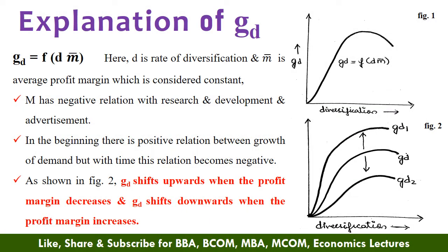Now, let us also discuss this model with the help of diagrams. GD is a function of D and M-bar. Here, D is the rate of diversification. Diversification means when a company changes its product line. Suppose an automobile company changes its product line to the telecommunications sector or retail business — we call that the company has diversified its business. And M is the average profit margin. M-bar is used as M is considered constant. This profit margin M has a negative relationship with advertisement and research and development. The negative relation means that if the company spends more on R&D and advertisement, the profit of the firm will decrease.